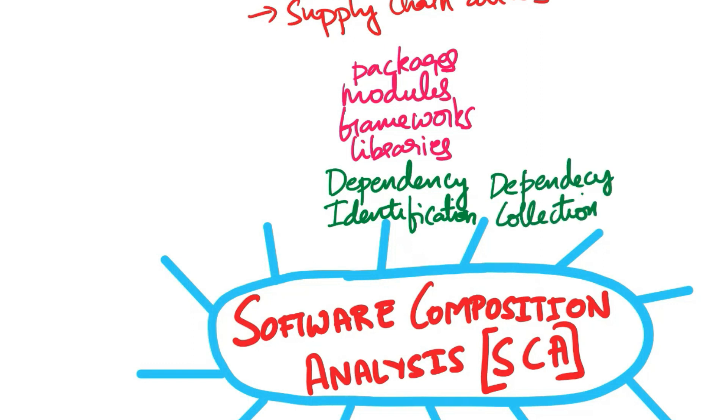Next is dependency collection. SCA tools gather information about these dependencies, including their names, versions, and sources. They create an inventory of all components, both direct and transitive.